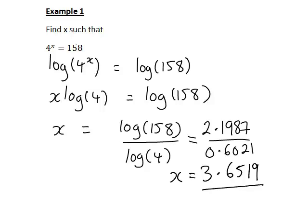And if you think about it, it makes sense that 4 to the 3.6519 would equal 158, because 4 to the power of 3 is 64, 4 to the 4 is 256, and this number lies between those.